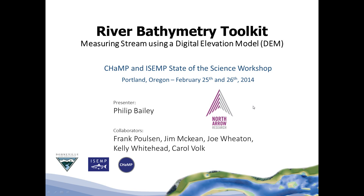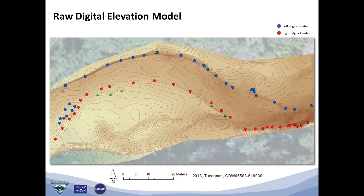This vignette introduces the River Bathymetry Toolkit, or RBT, a software tool at the center of CHAMP for measuring streams using a digital elevation model. Within the CHAMP program, crews capture the topography in and around streams using a series of SMART points. These points are then converted into a digital elevation model, a raster representation of the elevation in and around the channel.